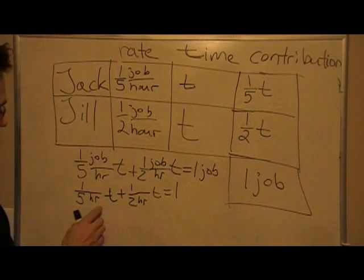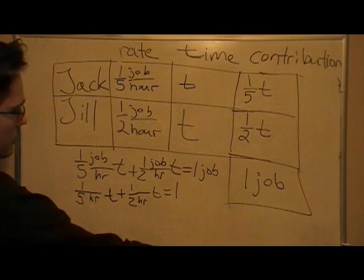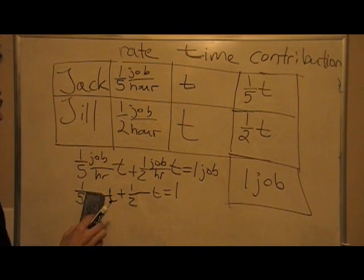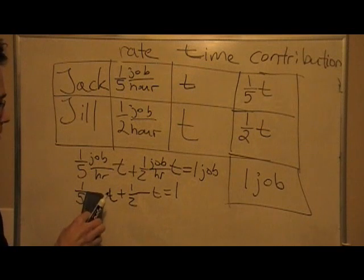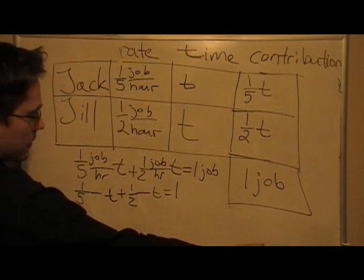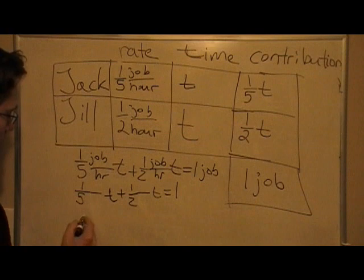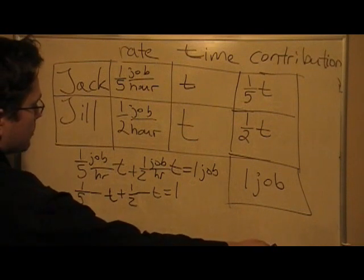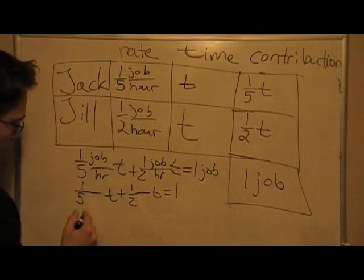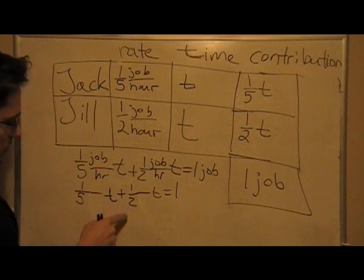So, now, we'll drop the units, the hours units. So, now we have this. Just keep in mind that they're really there. Just don't use them to simplify the calculations. So, now I have to add one-fifth and one-half. So, we have the following. We have one-fifth t plus one-half t equals one.